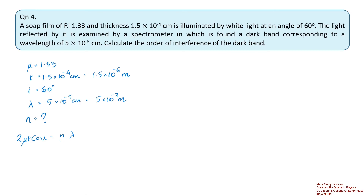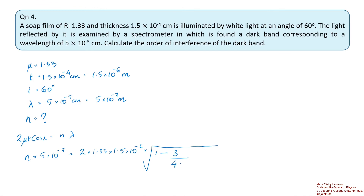Substituting the values: n × 5×10⁻⁷ = 2 × 1.33 × 1.5×10⁻⁶ × √(1 − sin²60° / 1.33²). Here sin 60° = √3/2, so sin²60° = 3/4. Doing the math, we get n = 6.05, so physically n will have the order 6.